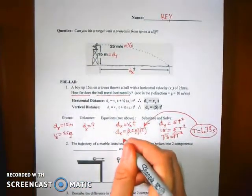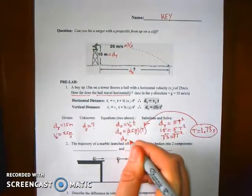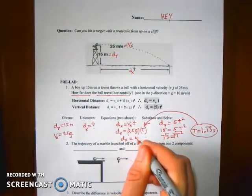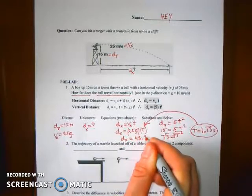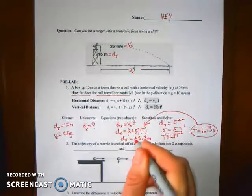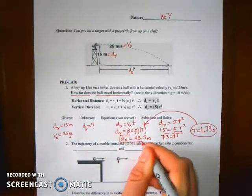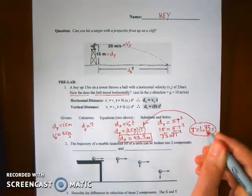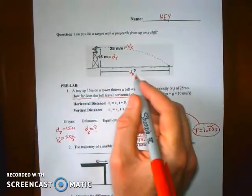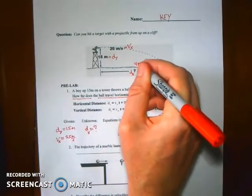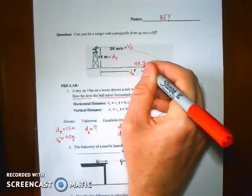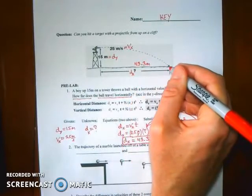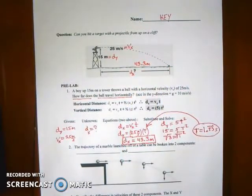So the distance this object travels in the x direction is 43.3 meters. I just rounded it to my three significant figures. So we know that this question mark here in the diagram is going to be about 43.3 meters before the ball hits the ground and lands in the target.